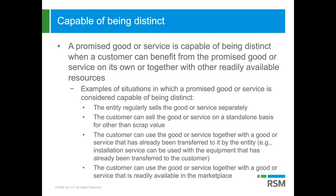A promised good or service is capable of being distinct when a customer can benefit from it on its own or together with other readily available resources. Examples include: the entity regularly sells the good or service separately; the customer can sell it on a standalone basis for more than scrap value; the customer can use it together with a good or service already transferred by the entity, such as installation service used with equipment; or the customer can use it together with goods or services readily available from other sources in the marketplace.